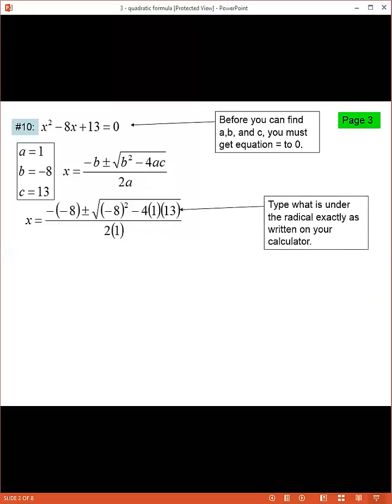We're going to use an online scientific calculator just to simply evaluate what's going on in the bottom here. So I would just type exactly as is: parentheses, negative 8, close your parentheses to the second power, minus 4 times 1 times 13. And you should get 12 underneath that radical.